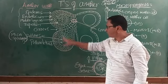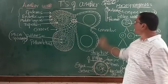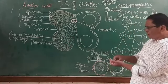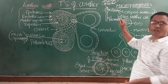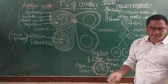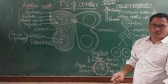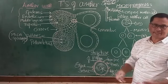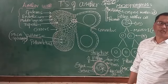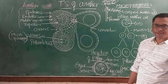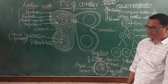The pollen tetrads or pollen grains cause the anther to break down and the pollen grains are released out for the process of pollination and fertilization.